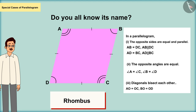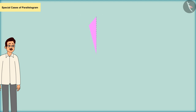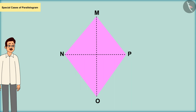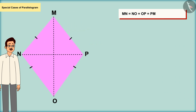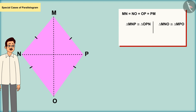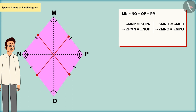Do you all know its name? It is a rhombus. If we make a special kind of kite-shaped figure whose four arms are of equal measure, you can see that we get such a shape. If we fold the shape with respect to both its diagonals, we find that the triangles formed on folding are mutually congruent, from which we can conclude that the angles in this shape are equal.